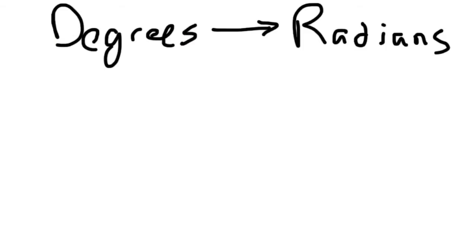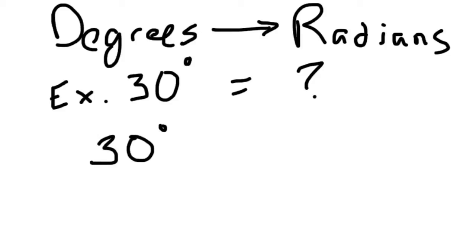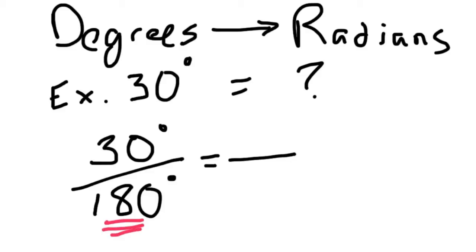So let's try an example, changing 30 degrees to blank how many radians. So you take 30 degrees and you divide it by 180 degrees and you set that equal in proportion to something out of pi because 180 degrees is the same as pi.